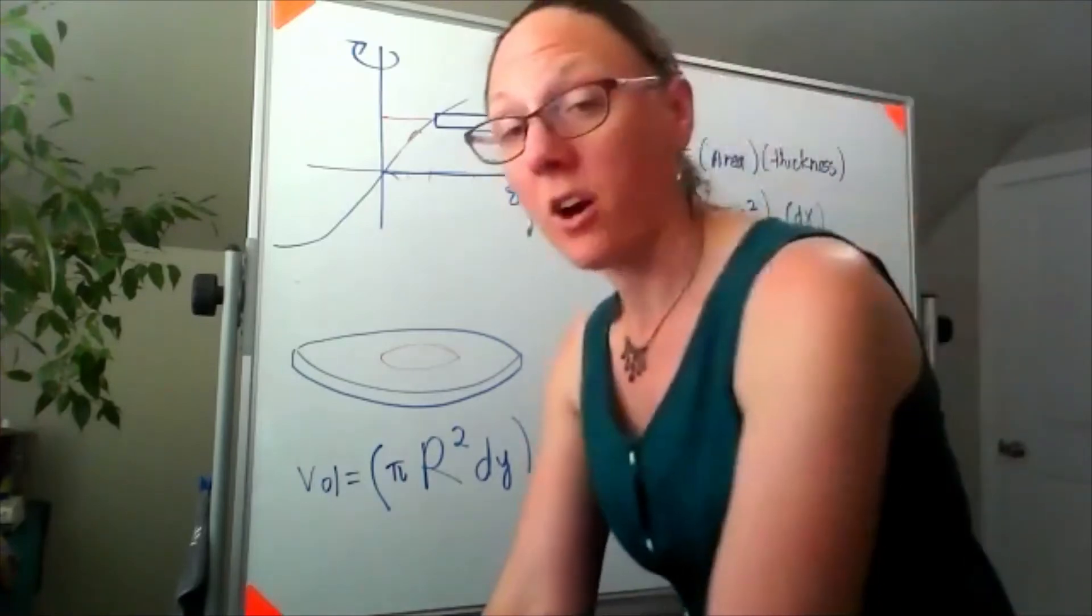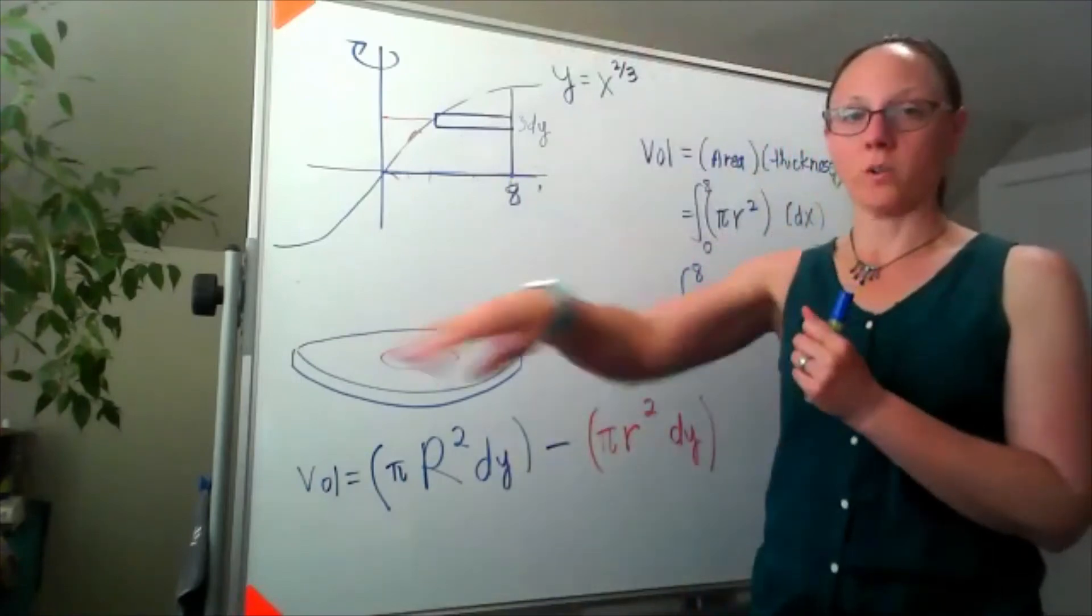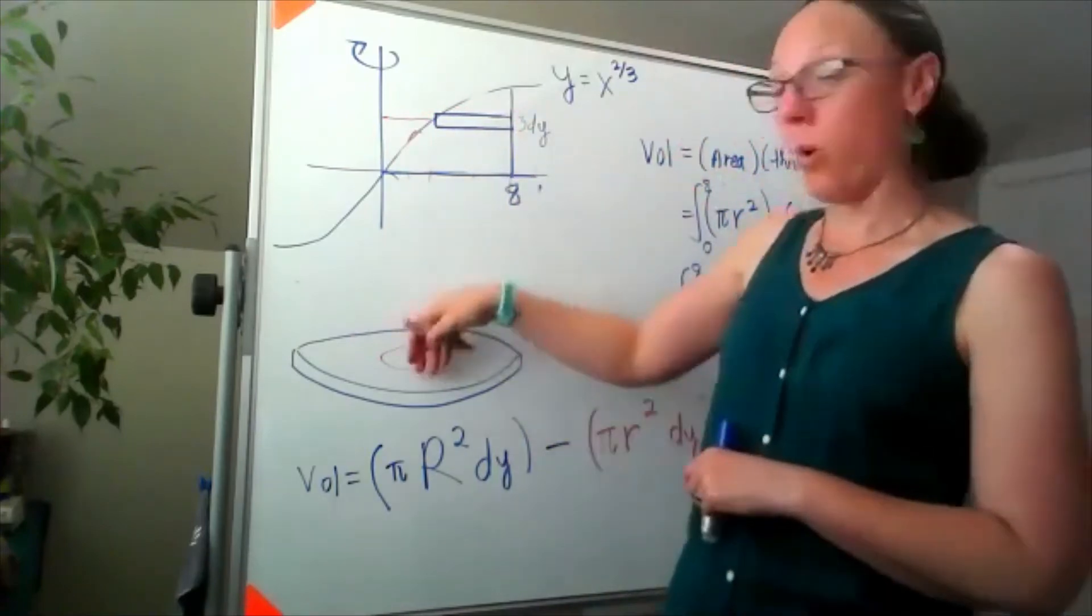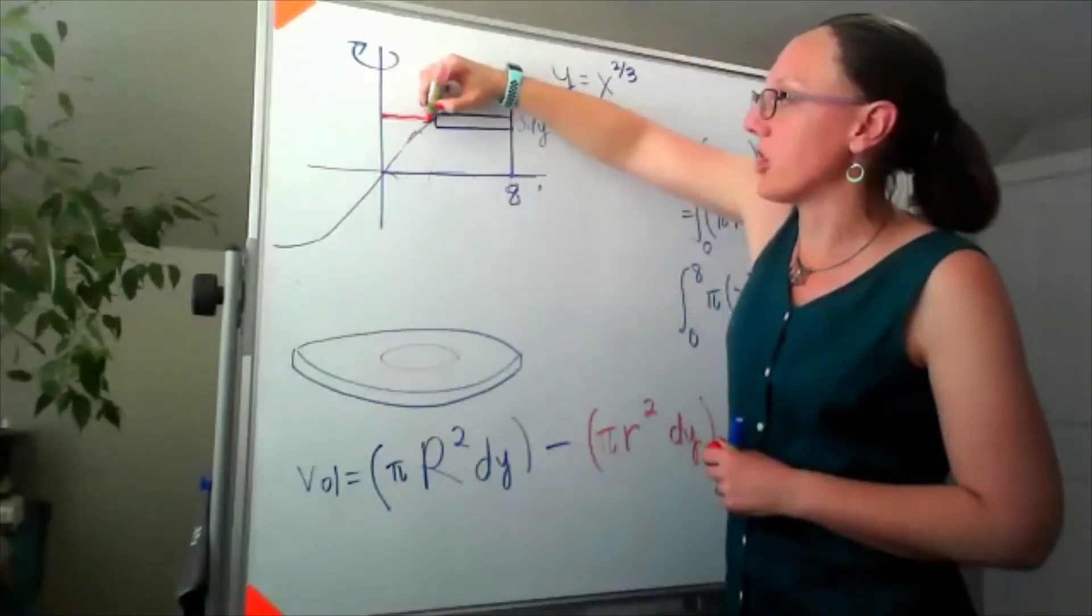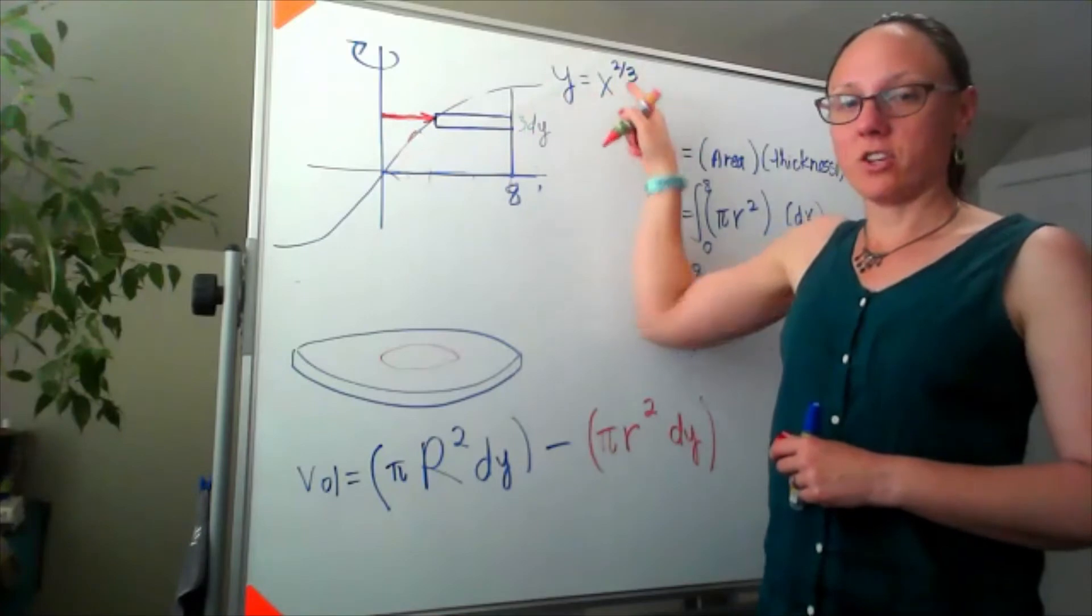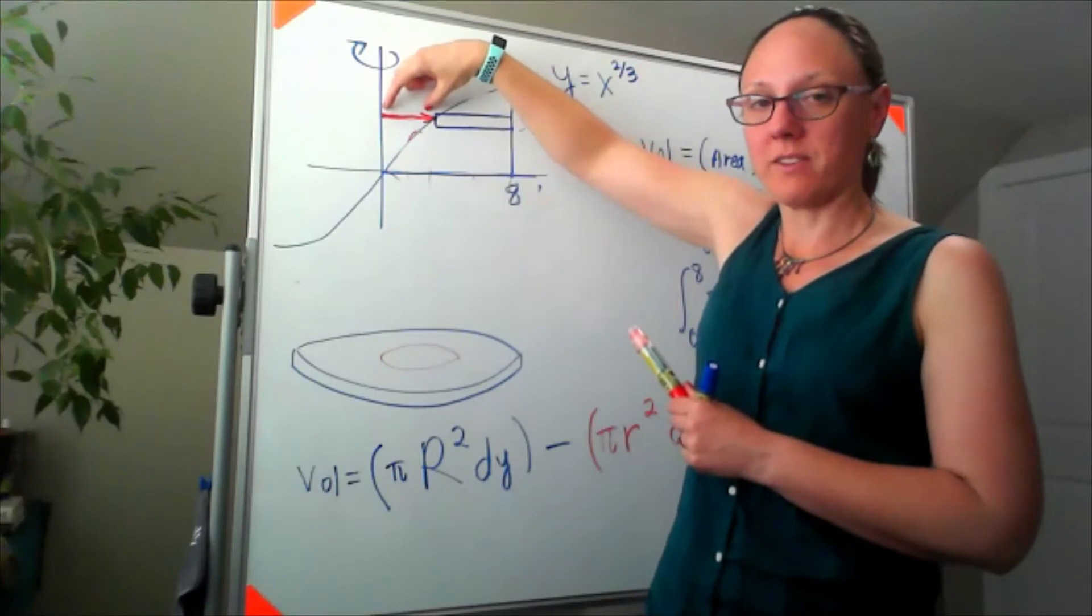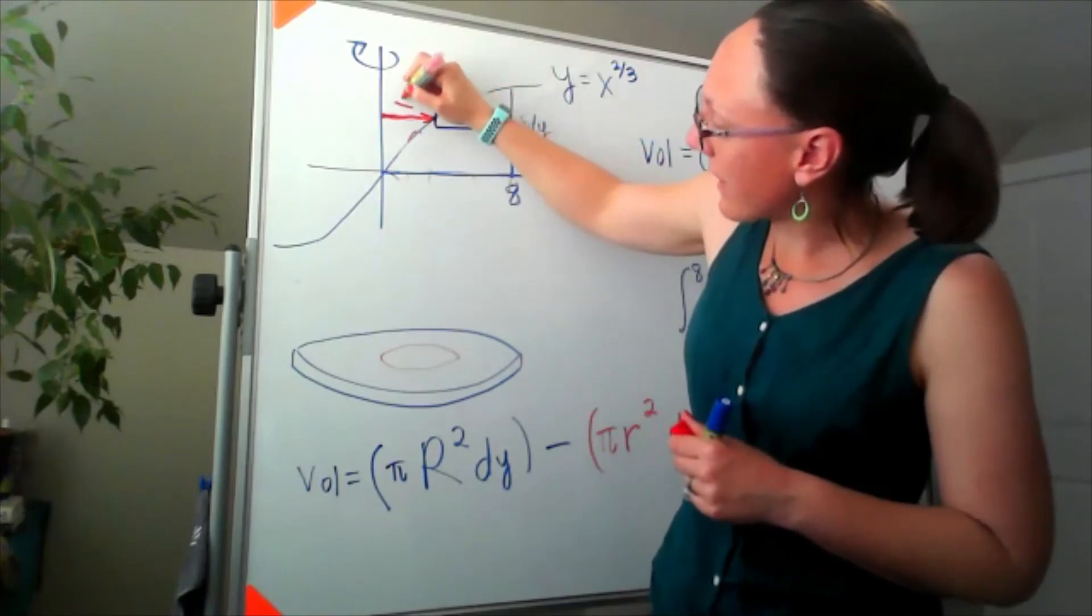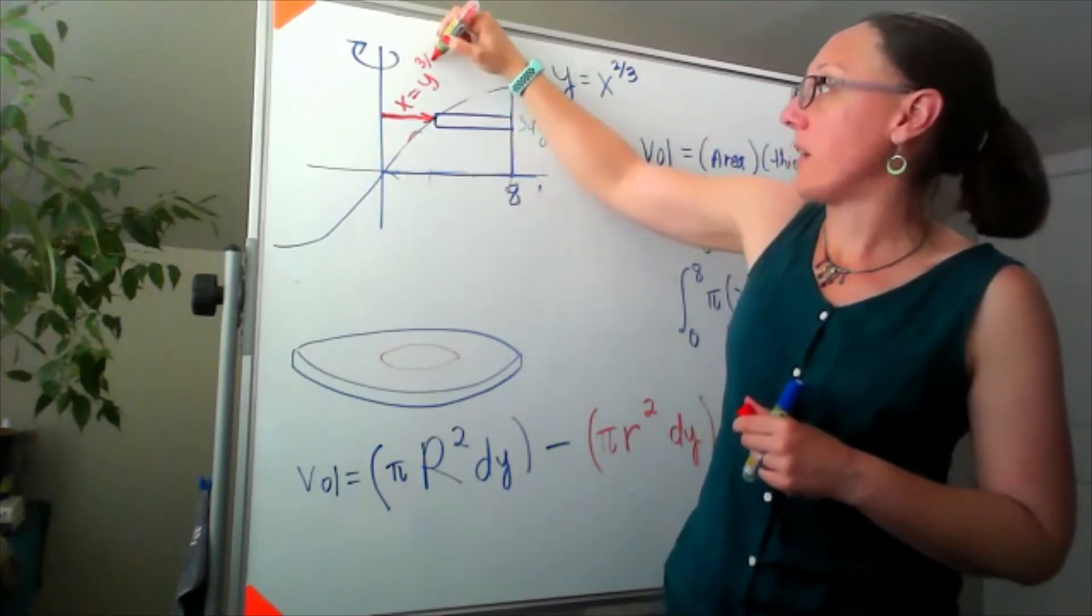Both of those I'd be integrating with respect to y, so we're gonna have to figure out those y bounds. I want to start with the radius. Our radius starts in the middle and goes until we hit a function. If I think about the smaller part that we're punching out—that hole that we're not going to have—if I start in the middle and I go until I hit the function, well, the function I'm hitting is y equals x to the two-thirds power. But this distance is not how far we've gone in terms of y; this distance is an x value.